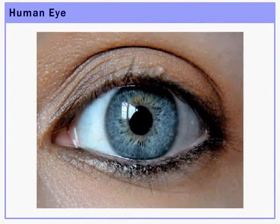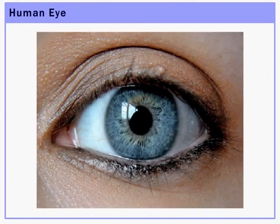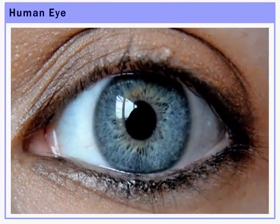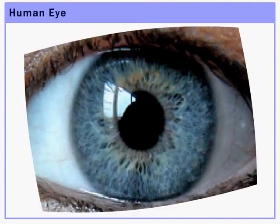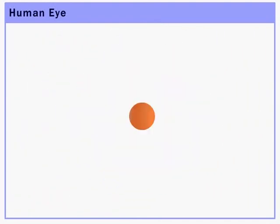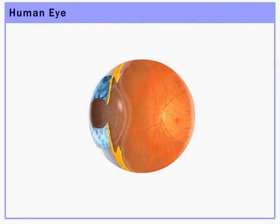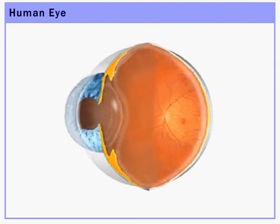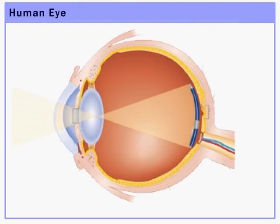In this module, we will talk about the human eye. As all of us know, the eye is the most essential part of our body. Let us take a deep study of the eye and go through its inner structure, which contains so many sub-parts that help it to function properly.